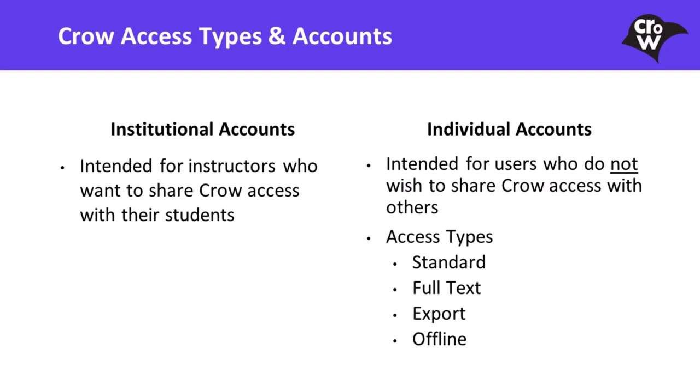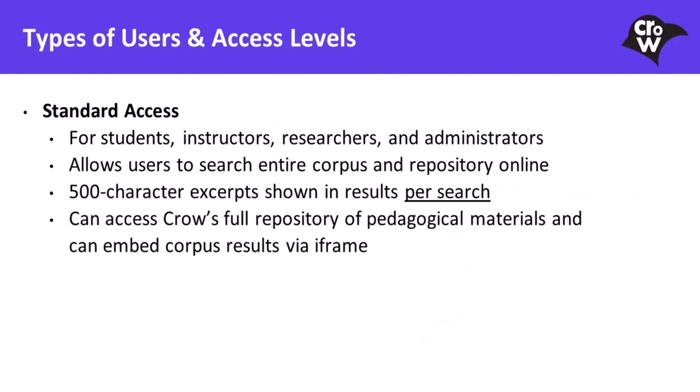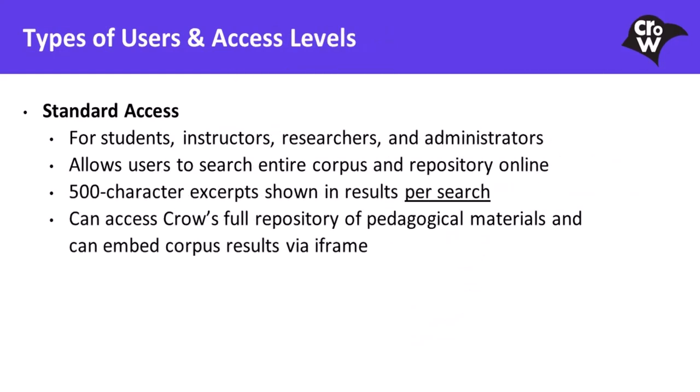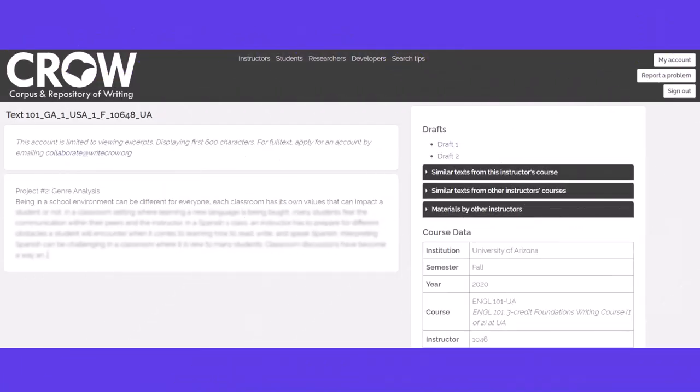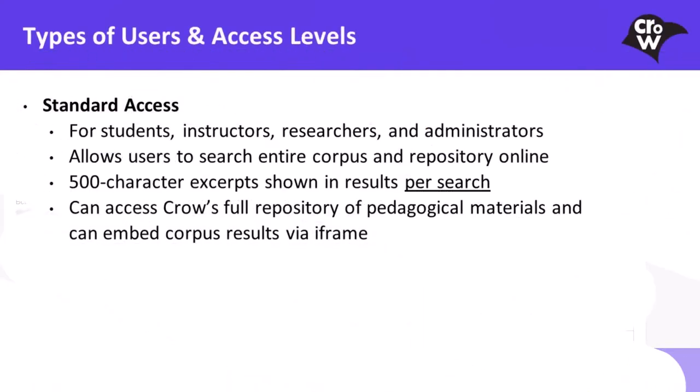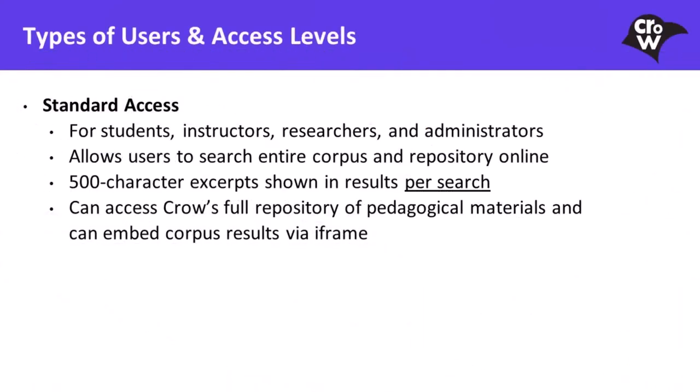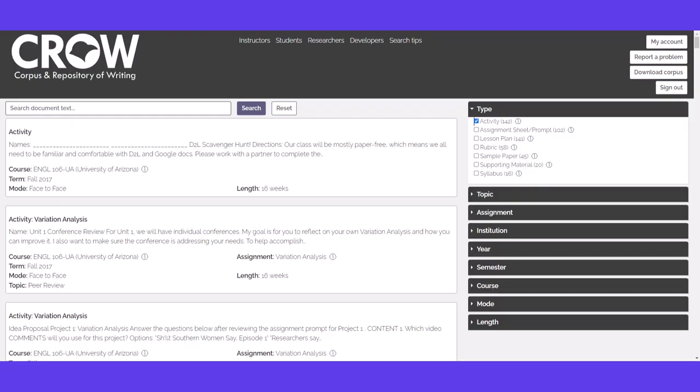Standard access is intended for students, instructors, researchers, and administrators. Standard access allows users to search the entire corpus online and perform searches using our interface. 500 character excerpts are shown in results per search. Additionally, users are allowed access to CROW's full repository of pedagogical materials and can embed corpus results via iframe.